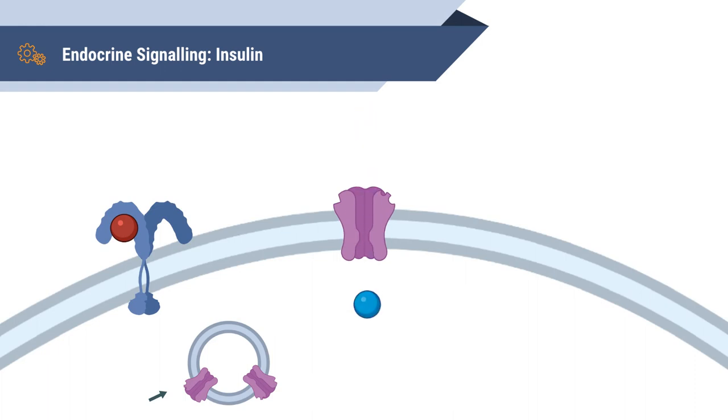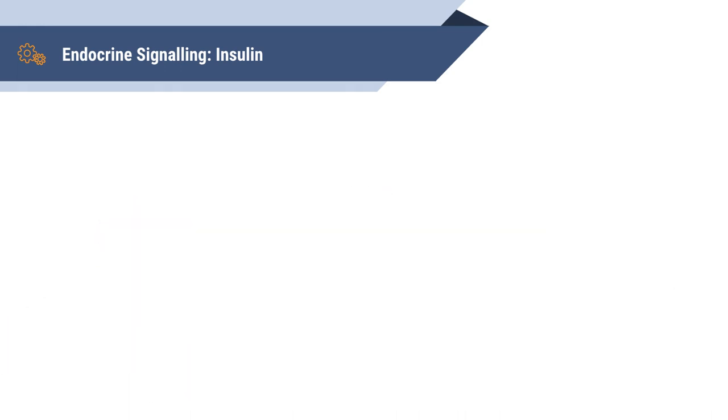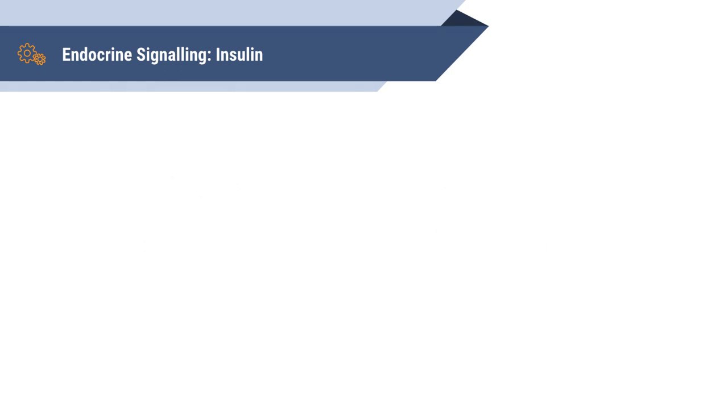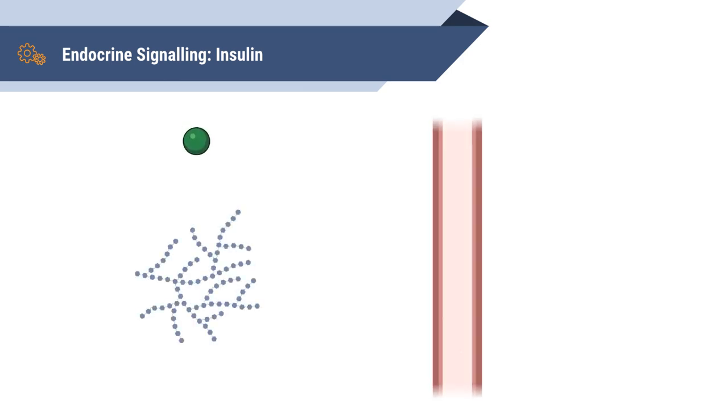As mentioned earlier, many hormones have negative feedback loops that regulate them. Another hormone called glucagon works to counteract the effects of insulin when blood glucose levels are too low. Glucagon exerts its effects by increasing blood glucose levels through the breakdown of glycogen, which is the storage form of glucose, into glucose.